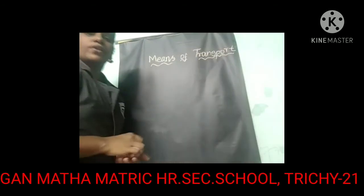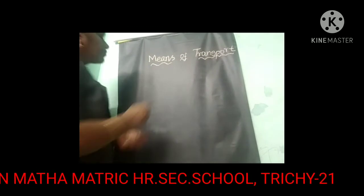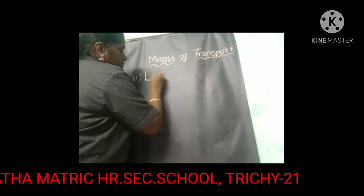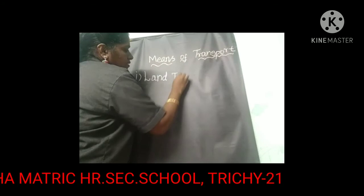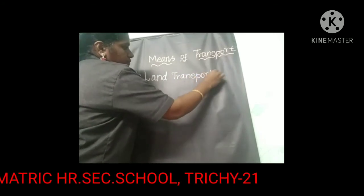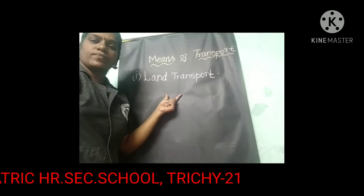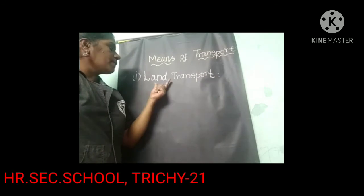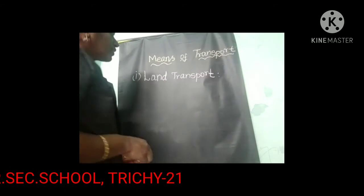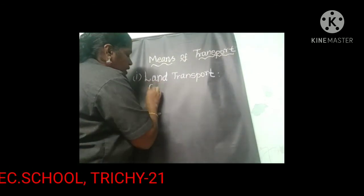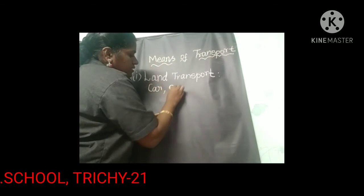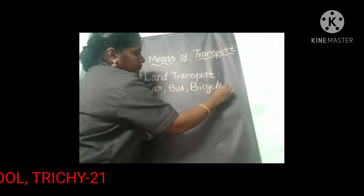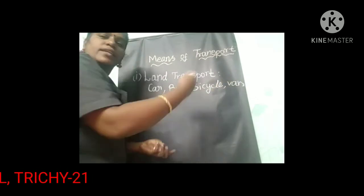The first one is land transport. What is land transport? Vehicles that move on roads. The examples of land transport are car, bus, bicycle, van, train, etc.